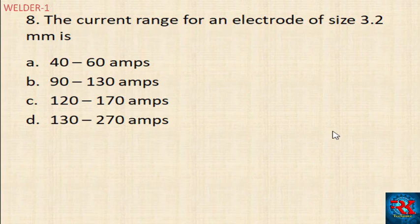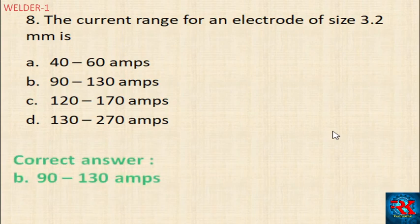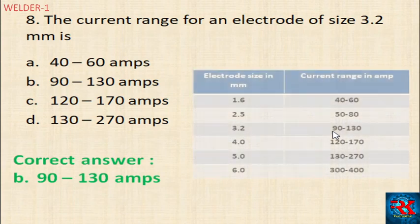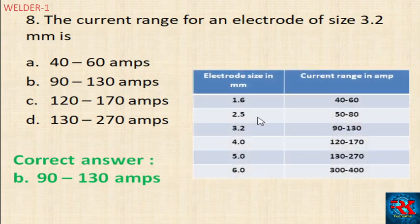The current range for an electrode of size 3.2mm is: 40 to 60 amps, 90 to 130 amps, 120 to 170 amps, or 130 to 270 amps. The correct answer is 90 to 130 amps. The electrode size and current range are different for each electrode.